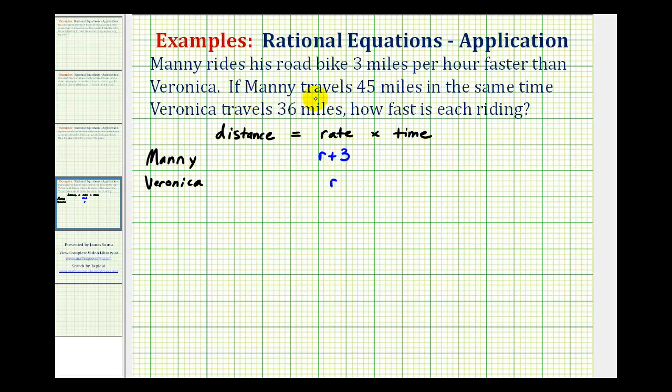Next, we're told that Manny travels 45 miles, that's his distance, in the same time that Veronica travels 36 miles. So Veronica travels 36 miles.